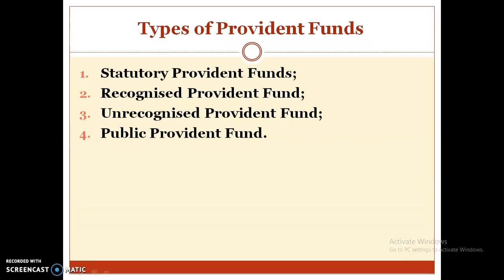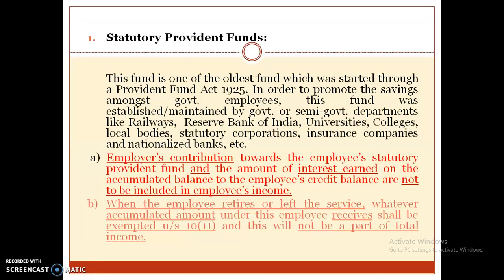There are 4 types of Provident Funds: Statutory Provident Funds, Recognized Provident Funds, Unrecognized Provident Funds, and Public Provident Funds.